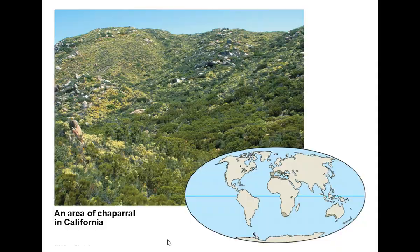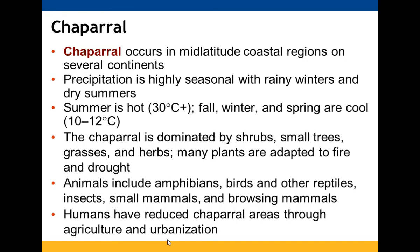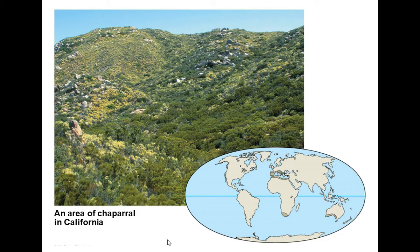Chaparral is found in mid-latitude coastal regions on several continents. It has highly seasonal precipitation with rainy winters and dry, hot summers; fall, winter, and spring are cool, around 10 degrees Celsius. It is dominated by shrubs, small trees, grasses, and herbs, all adapted to fire and drought. Animals include amphibians, birds, reptiles, insects, mammals, and browsing mammals. Humans have reduced these areas through agriculture and urbanization. In the US it's mainly in California; it also occurs in parts of South America, Africa, southern Europe (Portugal, Spain), and southwestern Australia.